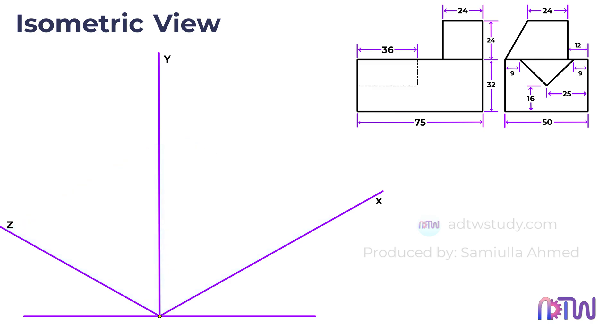In this video, we will use the first angle projection method. The diagram on the left illustrates the front view, while the diagram on the right depicts the object's left-hand side view. Let's now initiate the drawing process. The object's length measures 75 mm as specified in the front view.